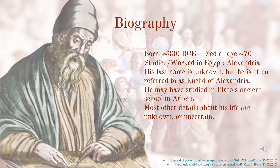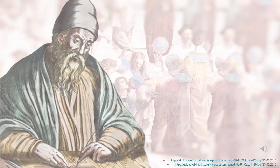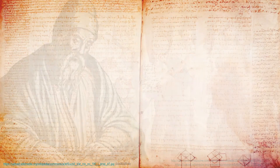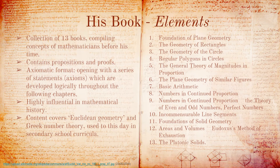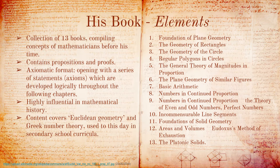He then taught in Alexandria at the time of Ptolemy. Euclid's vital contribution to mathematics was to compile the concepts of prior mathematicians into a series of books called Elements. This work later became known as Euclidean Geometry.